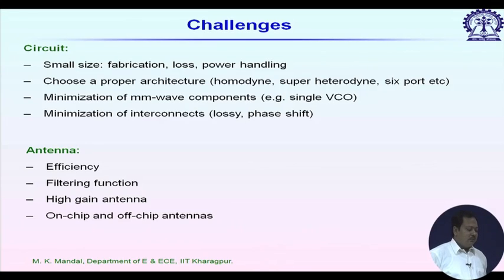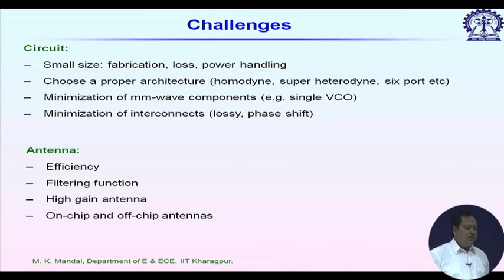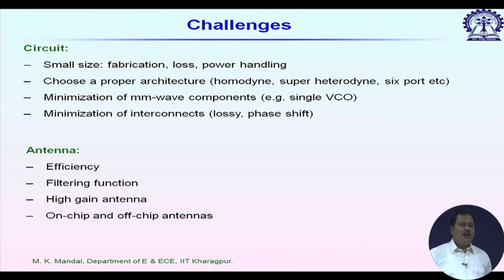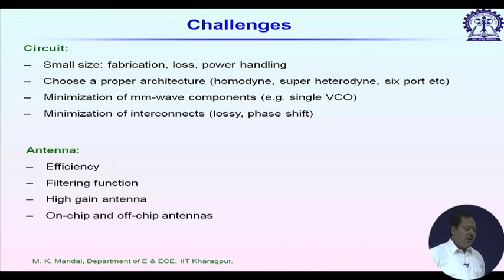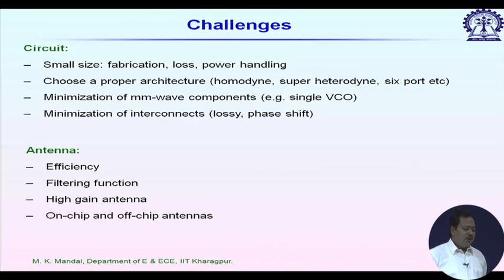Circuit realization is another challenge. At millimeter wave frequencies the circuit size is already very small, fabrication is difficult, and loss is high. As circuit size becomes small, its power handling capability decreases. It is important to choose a proper architecture: for a receiver, options include homodyne, super-heterodyne, or six-port receiver designs.